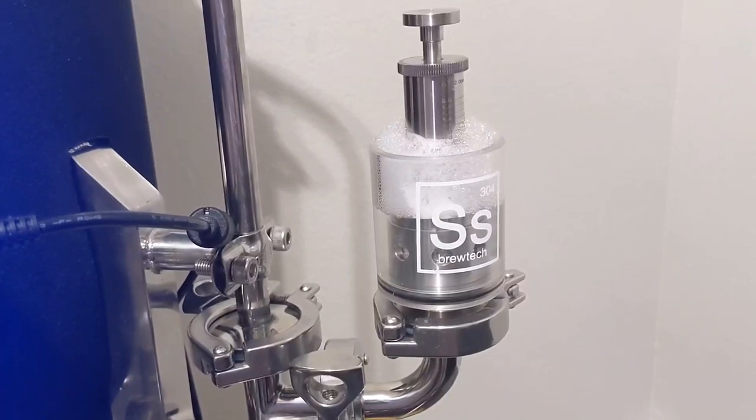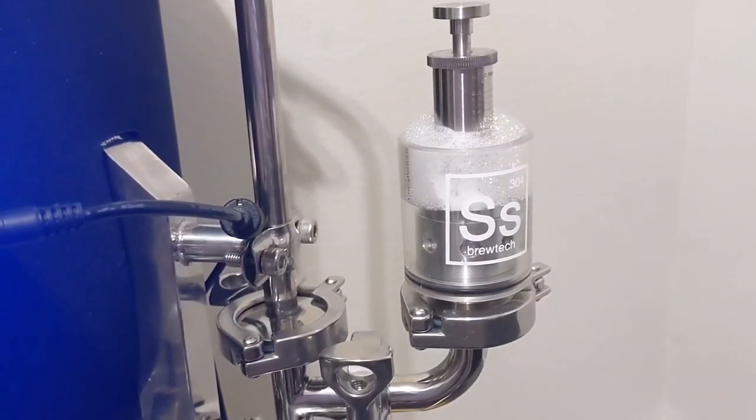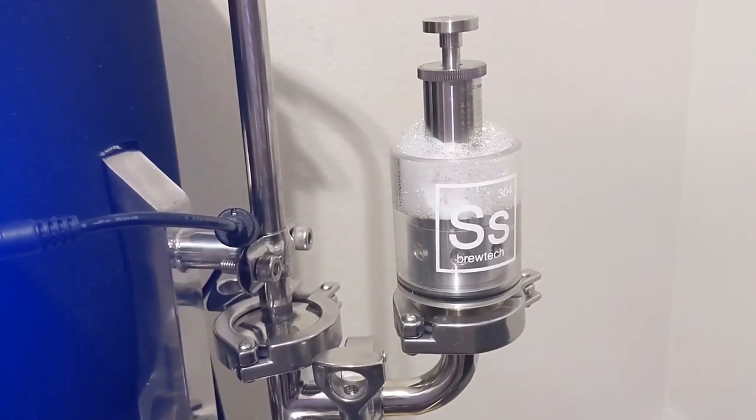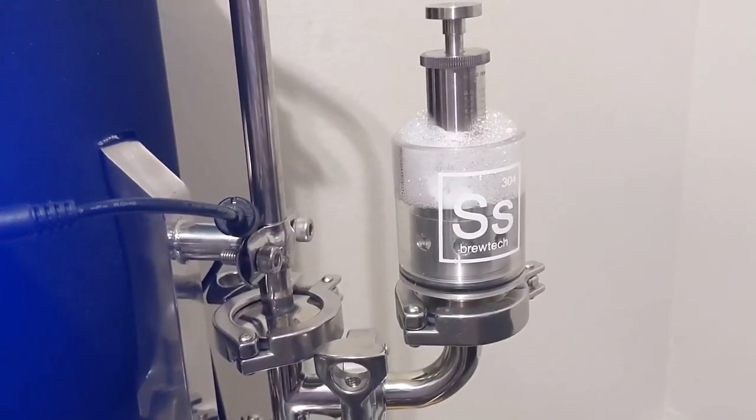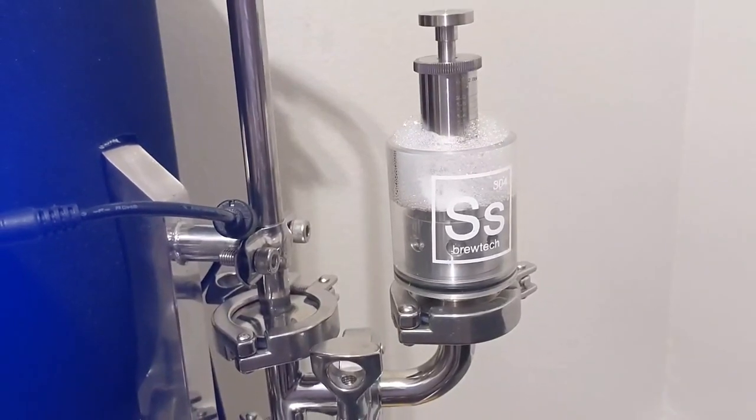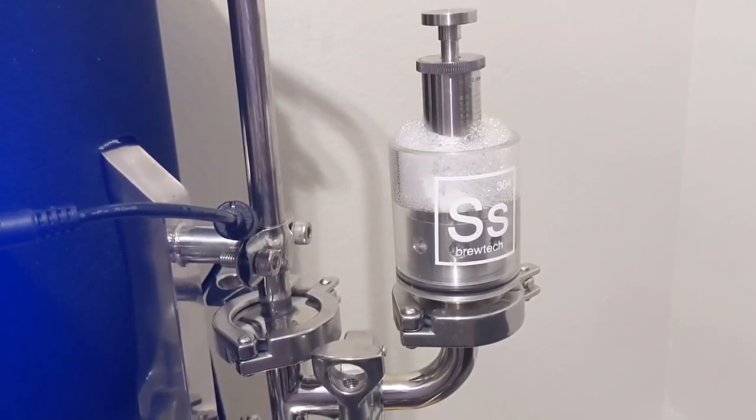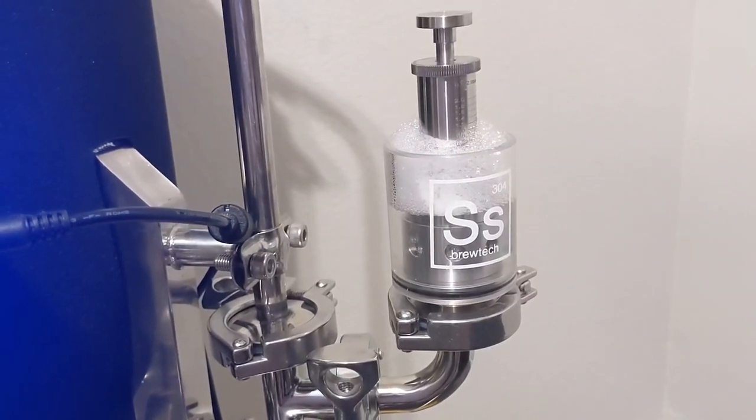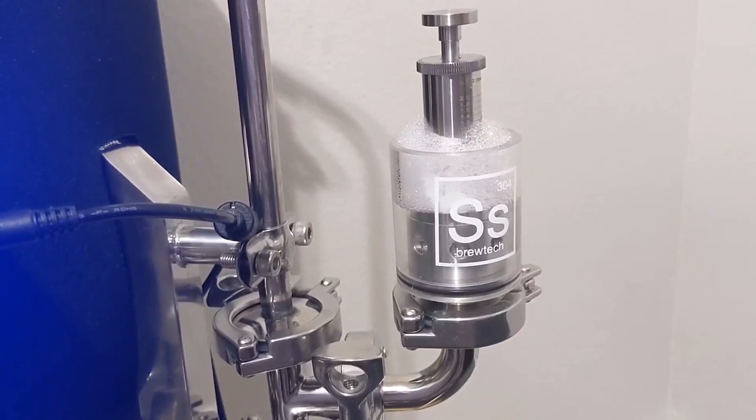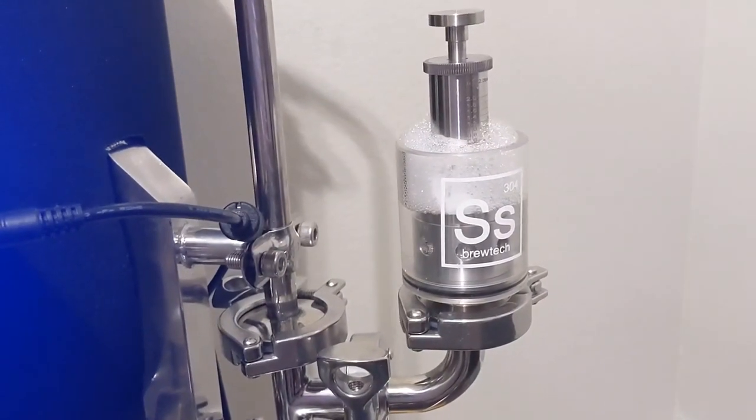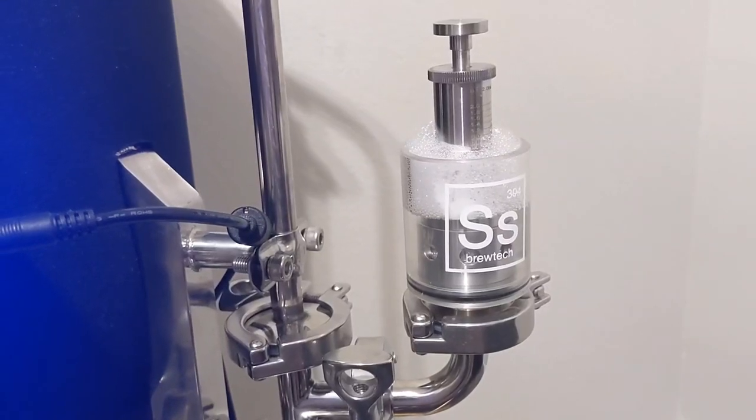I've used a Fermentasaurus and a FermZilla and various other spunding valves. I made my own and bought one, and this one is better. It's a lot more money but it's super easy to dial in, it's convenient. You're able to see the bubbles in the star san so you get a really good idea of what you're doing pressure-wise. I'm actually pretty happy with it so far.